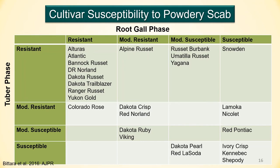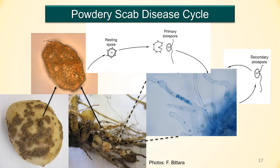I really want to call your attention to those cultivars in the upper right-hand corner. Some cultivars — including Russet Burbank, Umatilla Russet, and Snowden — are resistant to the tuber phase, so you may not see pustules on the tuber surface, but they produce root galls. These root galls are important because they contain the pathogen's resting structures. If you remember the disease cycle, those root galls contain resting structures that may not be important to the current crop, but the next time you grow potatoes in that field, there will be a higher pathogen population and higher disease pressure.